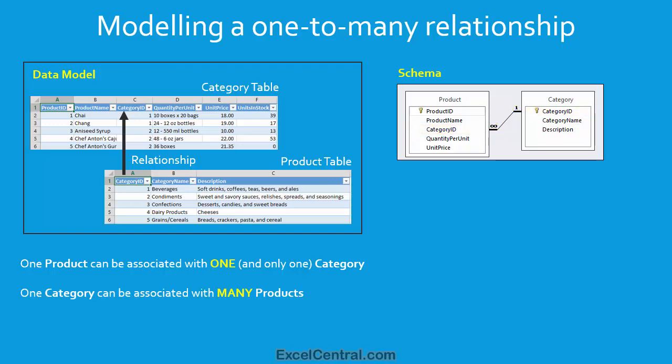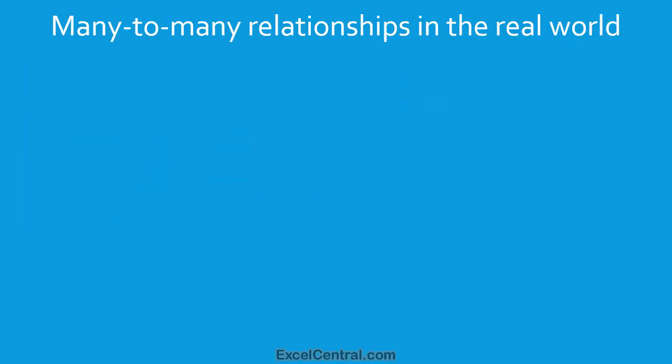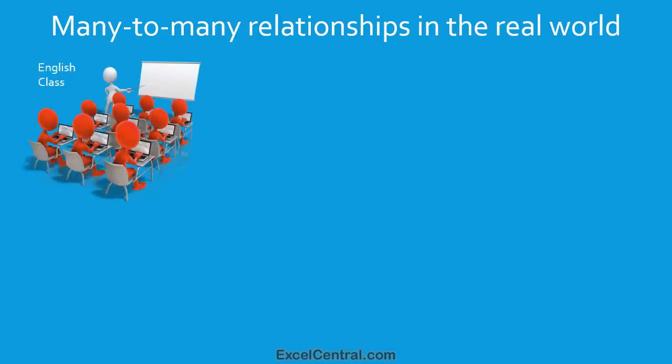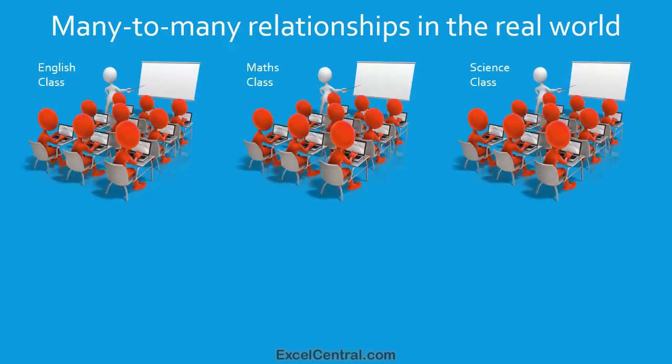By now you should have a good understanding of one-to-many relationships. But now let's move on to many-to-many relationships — they're a bit more challenging to model. Let's have a real-world example. The example I've chosen is a school with many classes: an English class, a Maths class, and a Science class. The many-to-many relationship here is that one class has many students, and each student has many classes.